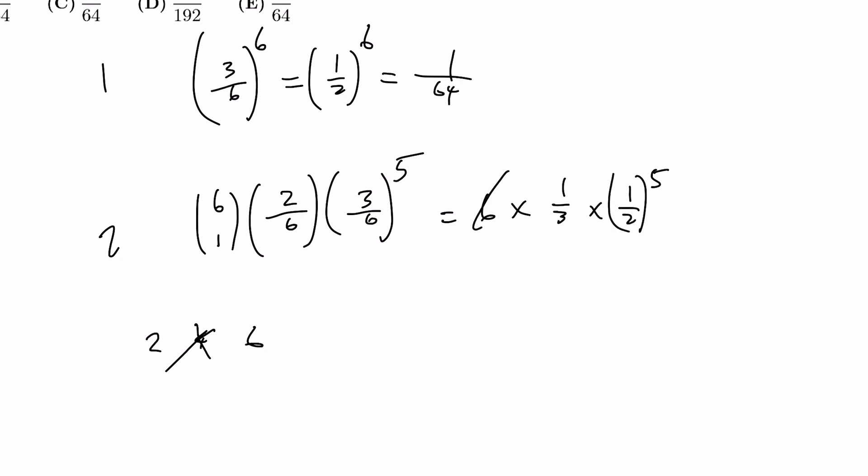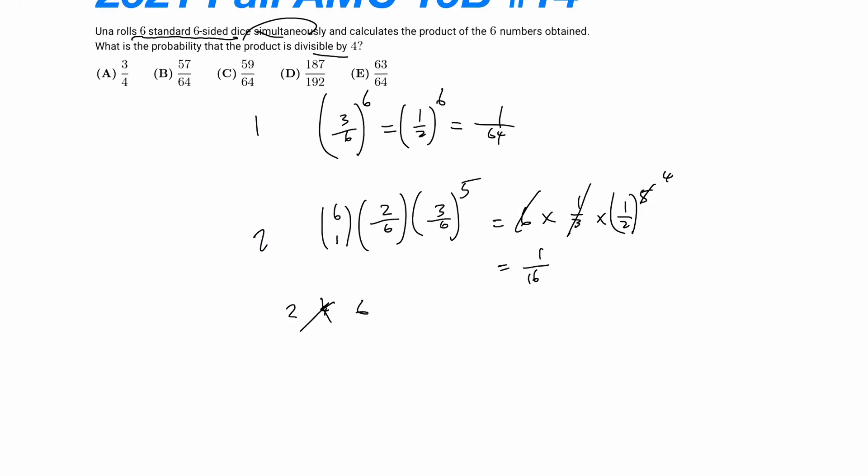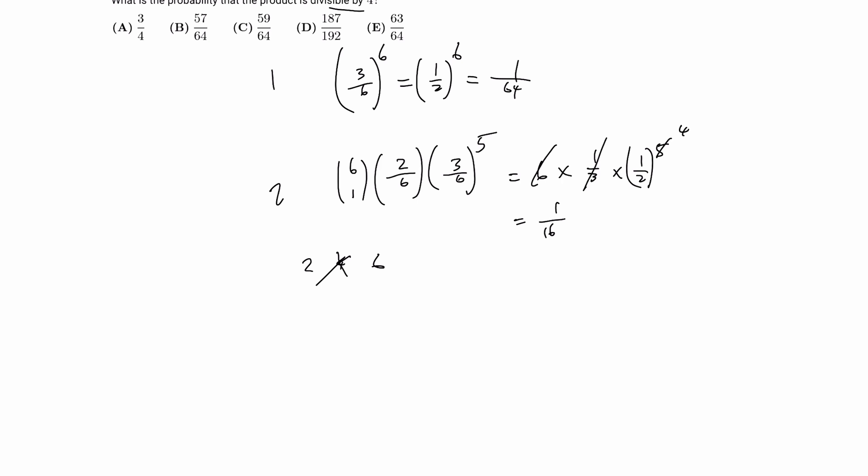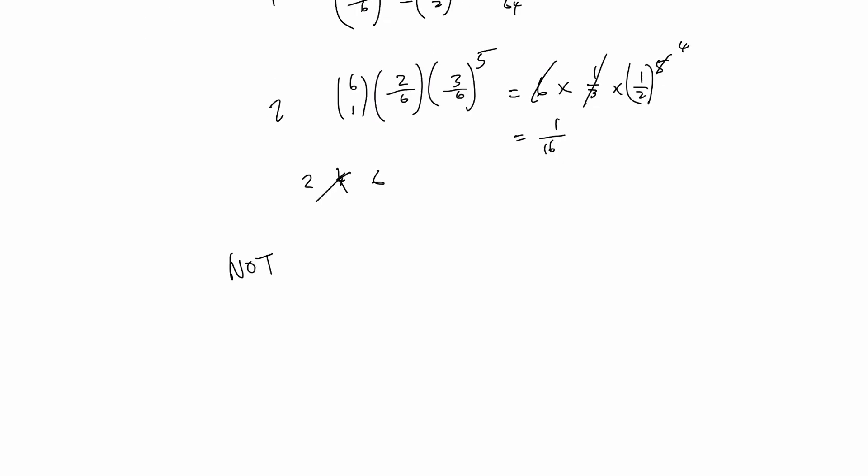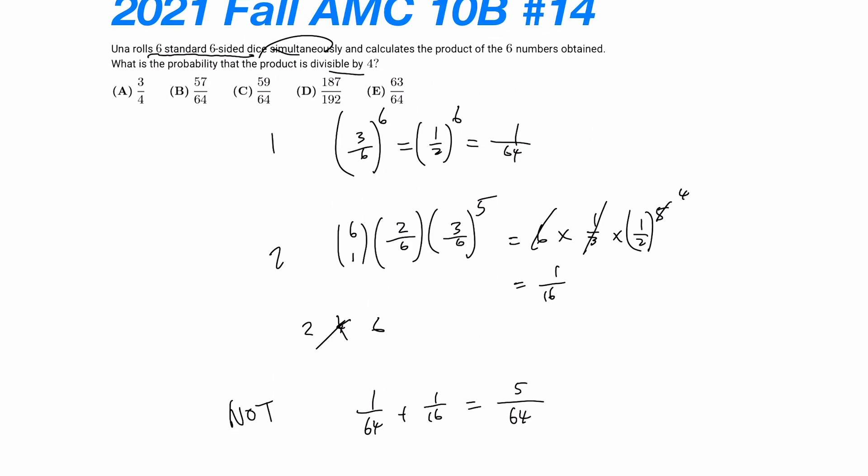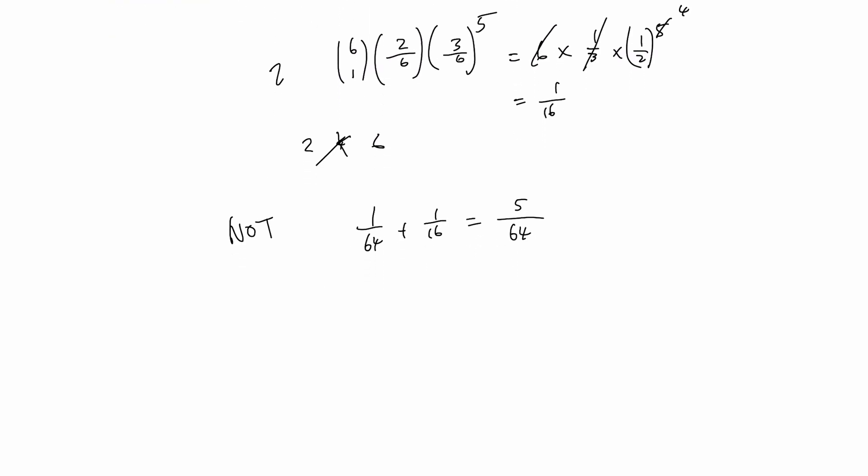We cancel out this and one of this, we get 1 over 16. Now, the probability that is not divisible by four is equal to 1 over 64 plus 1 over 16, which gives us 5 over 64. And luckily, it doesn't even have this answer, so you wouldn't be silly on that either.